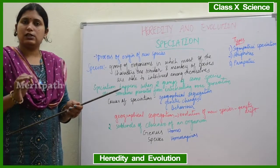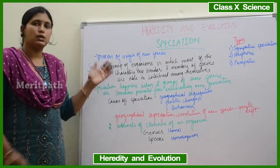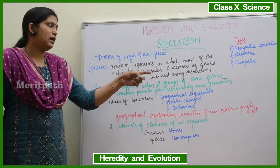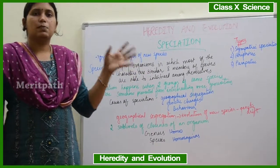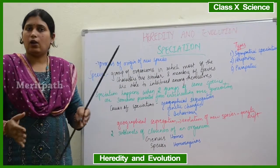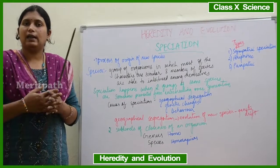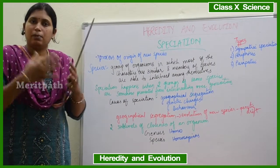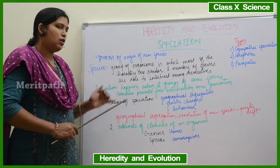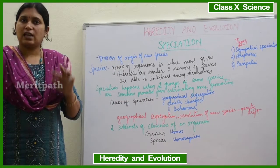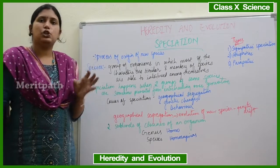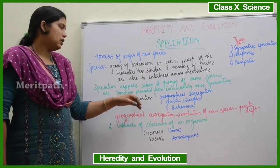So when does speciation actually happen? Speciation happens when two groups of the same species are somehow prevented from interbreeding over the generations. If two groups of the same species are prevented from mating or reproducing over a period of a few generations, that is known as speciation.